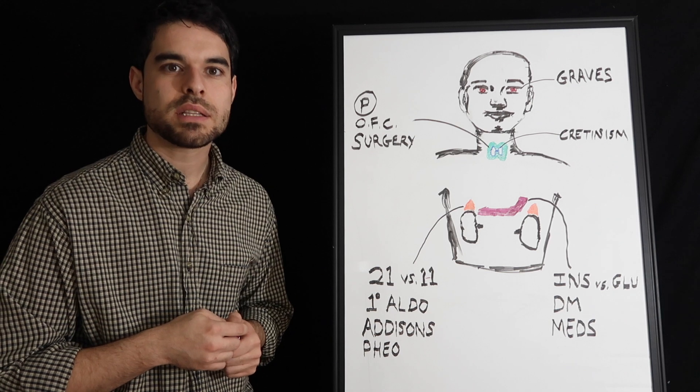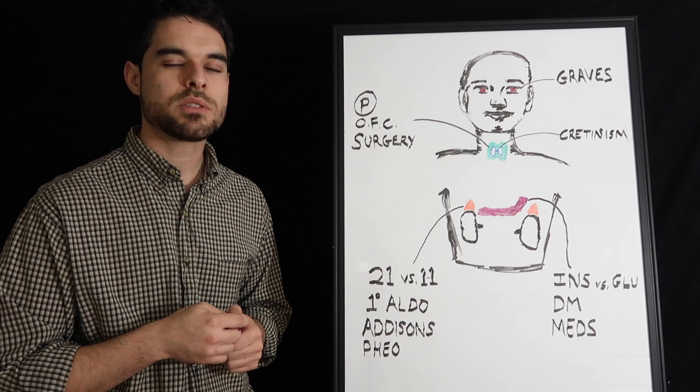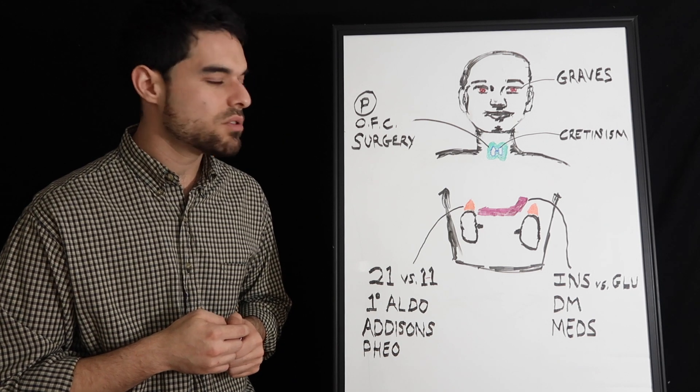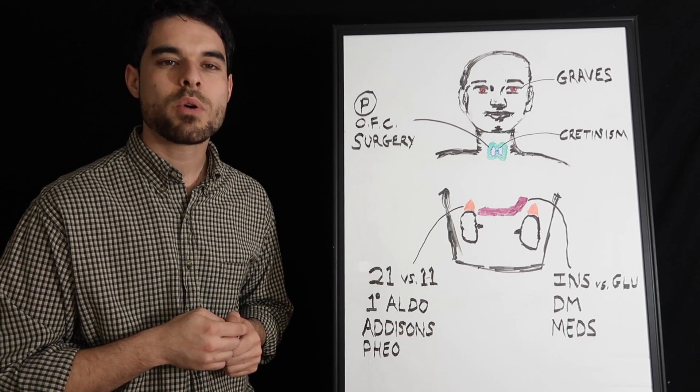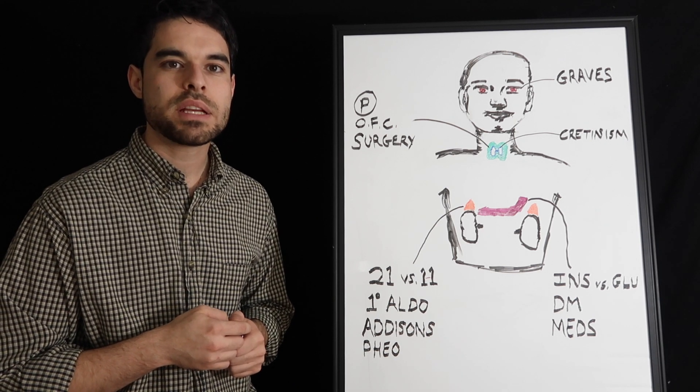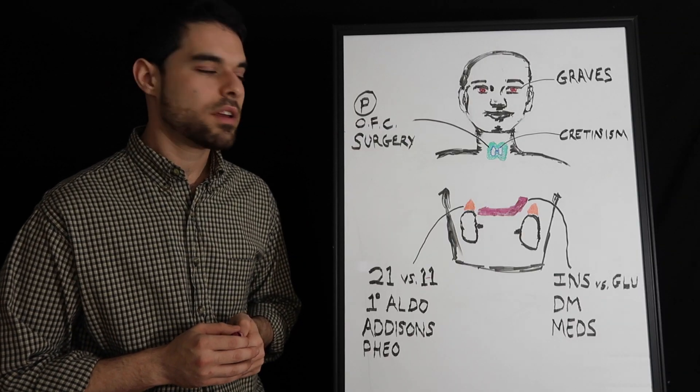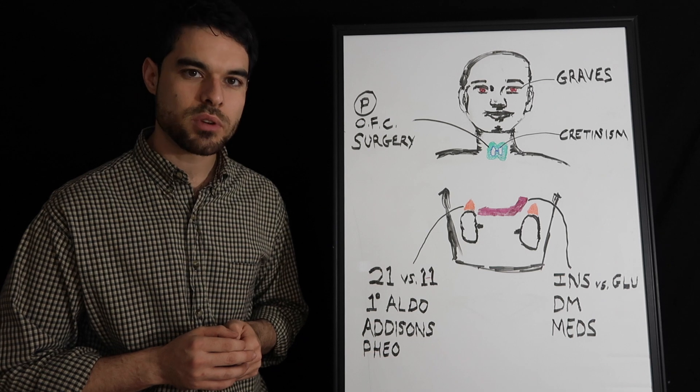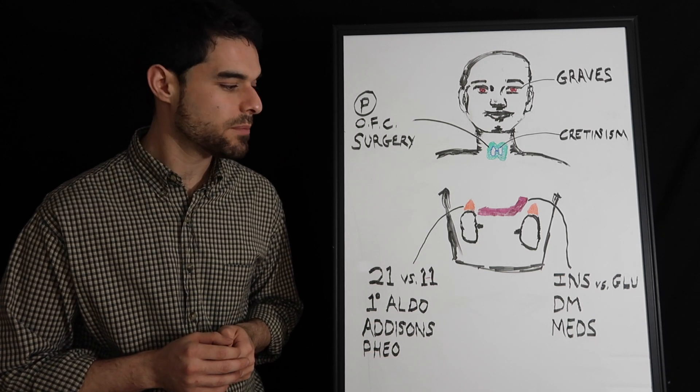Regarding diabetes, the number one cause of death with patients with diabetes is going to be heart attacks. If you have gestational diabetes, the baby will be born with beta islet cell hyperplasia. And the treatment for a hypoglycemic episode is going to be intramuscular glucagon. Intramuscular glucagon is the best way to deliver it.